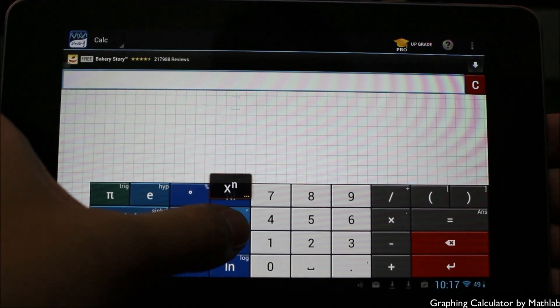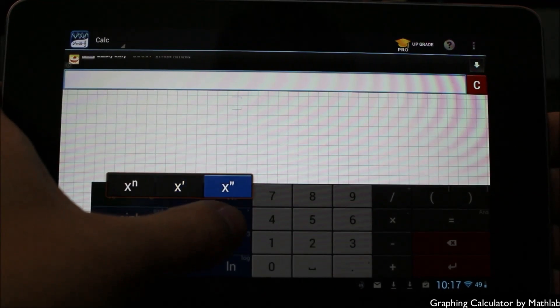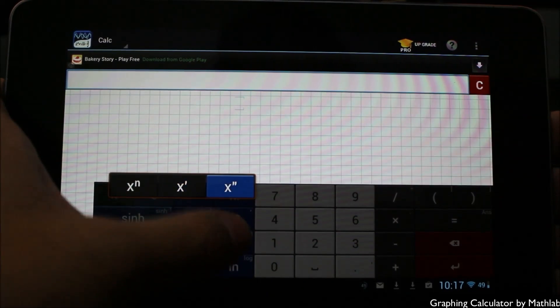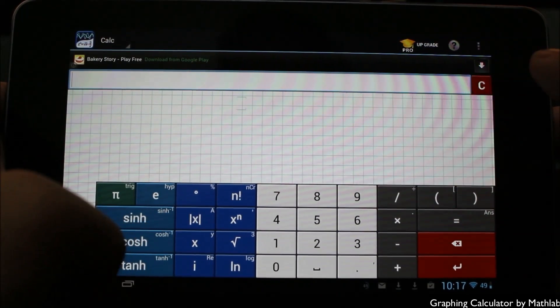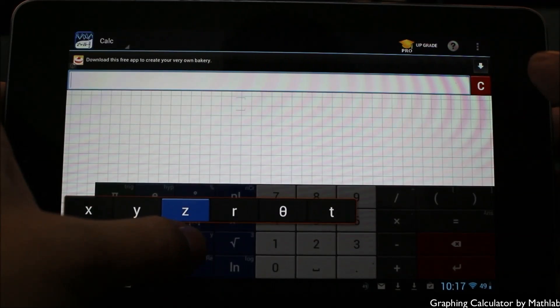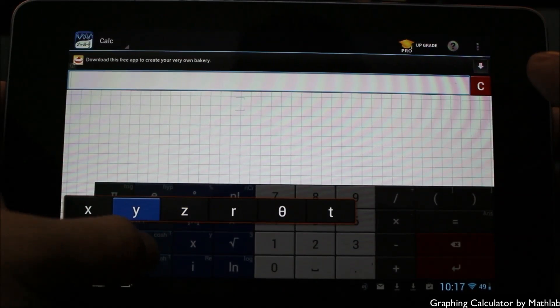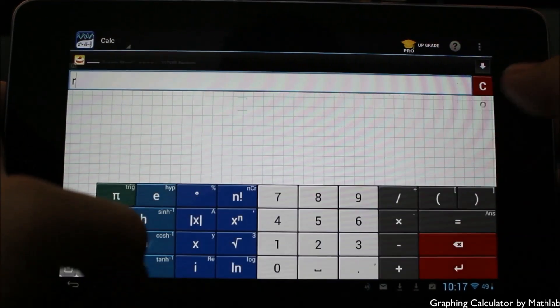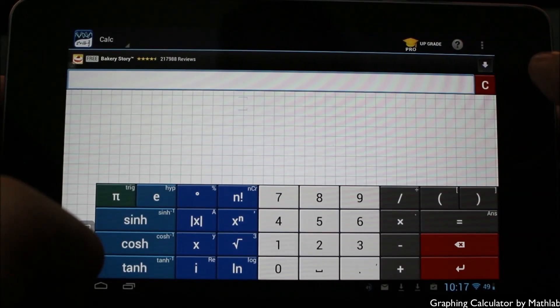Other options: you have first derivative and second derivative. You can just choose between the two by holding and letting go on the x. Also, you have the variables. If you want to get more variables, you hold on x and you have options for y, x, z, r, etc.